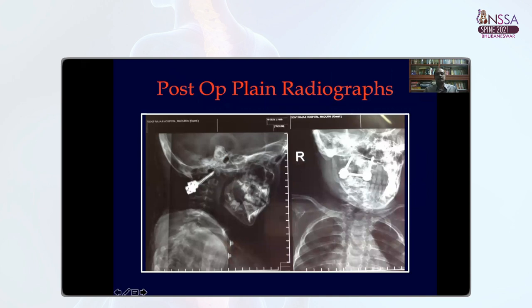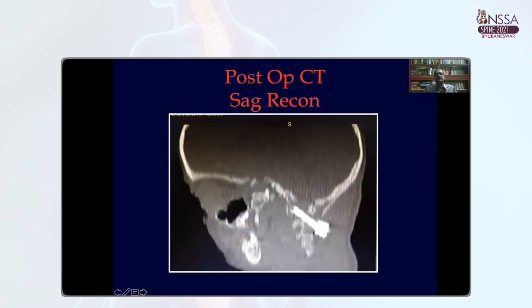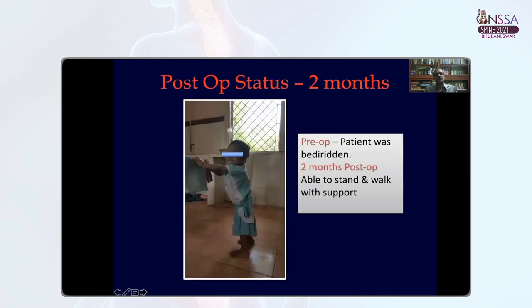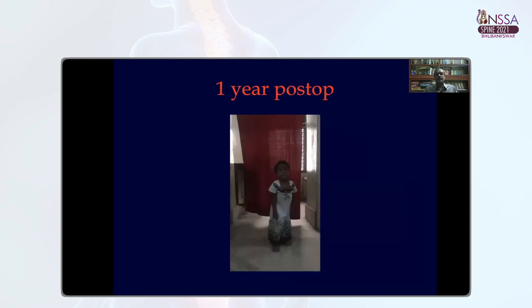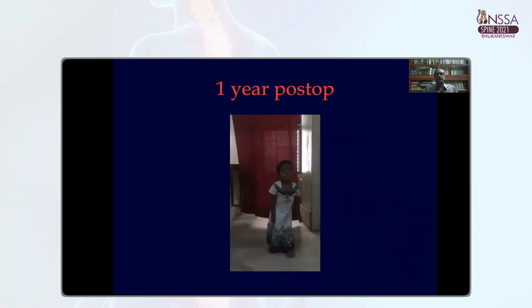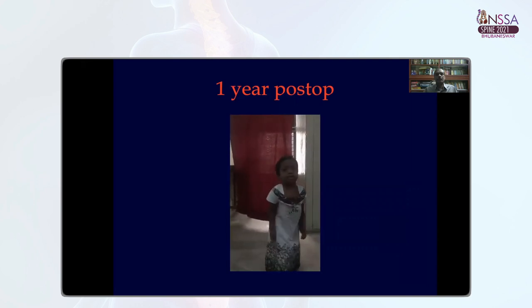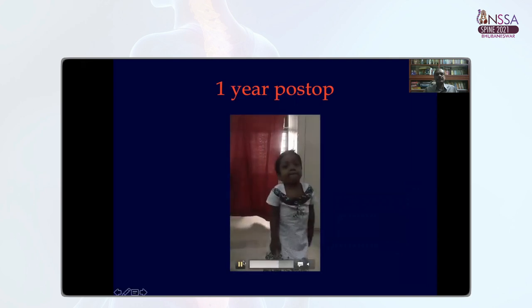The post-op image shows the two transarticular screws, and the post-op CT sagittal reconstruction shows the transarticular screws in situ. Two months post-op, the child who was bedridden was able to stand and walk with support. Eight to one year later she was able to walk independently with support. It is important to note the gait in these children may not look normal because of the associated skeletal dysplasia.